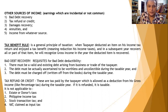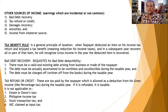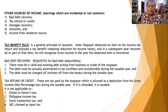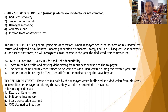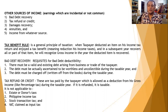Tax refund or credit: these are taxes paid by the taxpayer which were allowed as a deduction from gross income, like percentage tax. If the percentage tax has been refunded by the BIR or declared as a tax credit, the taxpayer must declare it as part of gross income in the year it was refunded or allowed as tax credit. This tax refund or tax credit rule is not applicable to estate tax, donor's tax, Philippine income tax, or input VAT claimed as input tax.